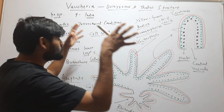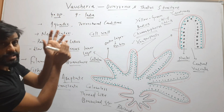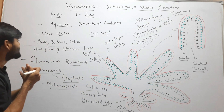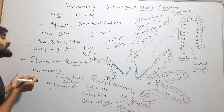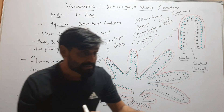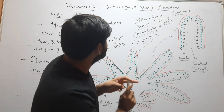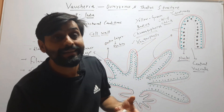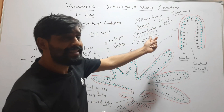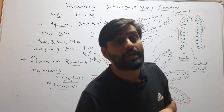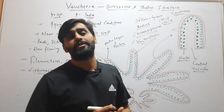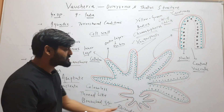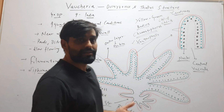To sum up: Vaucheria has 40 species, out of which 9 are from India. It is aquatic but also found in terrestrial conditions — in ponds, ditches, lakes, and slow flowing streams. Its thallus is filamentous, branched, and siphoneous, meaning aseptate and multi-nucleate. The cell wall has an outer pectin layer and inner cellulose layer. Outer cytoplasm contains chromatophores with chlorophyll a, chlorophyll b, and xanthophyll. Inner to these are many nuclei, and further inside is a central vacuole. The thallus is attached to the substratum by colorless, thread-like, branched rhizoids.